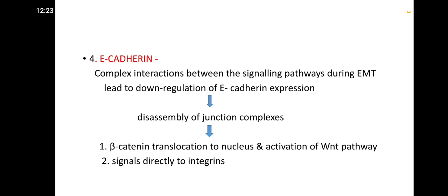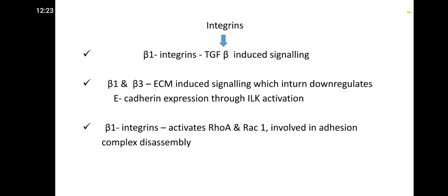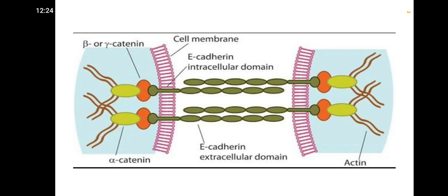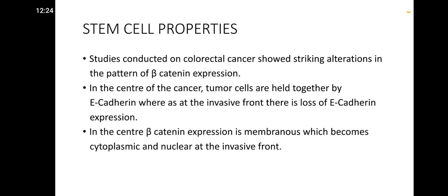Interactions between signaling pathways during EMT lead to downregulation of E-cadherin expression, causing disassembly of junctional complexes, beta-catenin translocation to the nucleus, activation of the Wnt pathway, and signaling directly to integrins. Beta-1 and beta-3 extracellular matrix-induced signaling downregulates E-cadherin expression through ILK activation. Beta-1 integrins activate RhoA and Rac-1, involved in adhesion complex disassembly. E-cadherin downregulation is central to EMT.